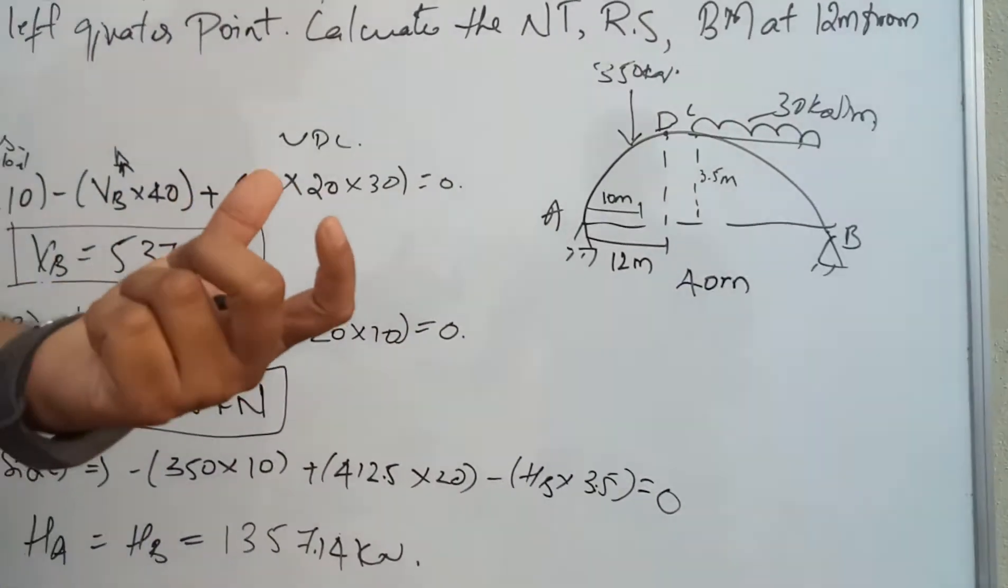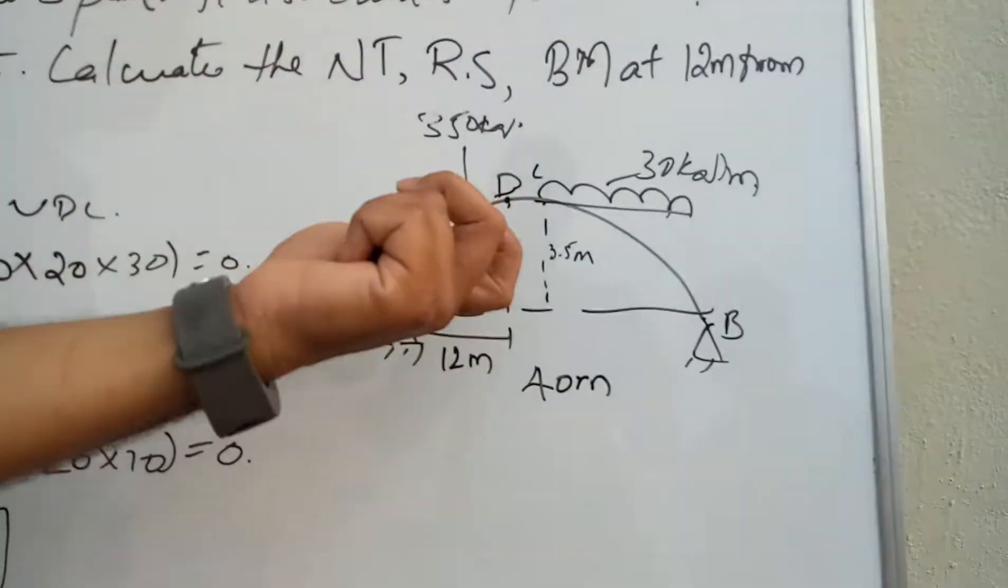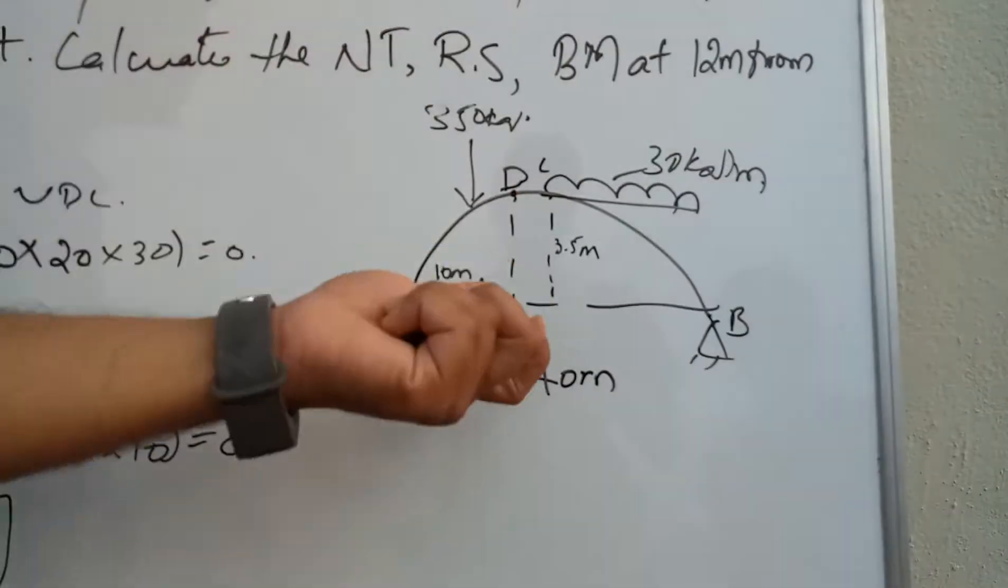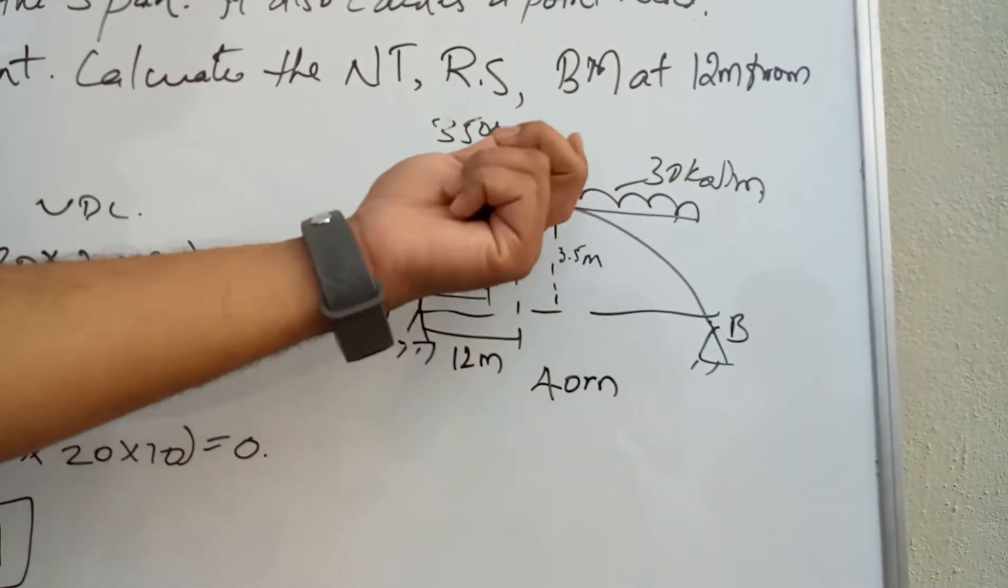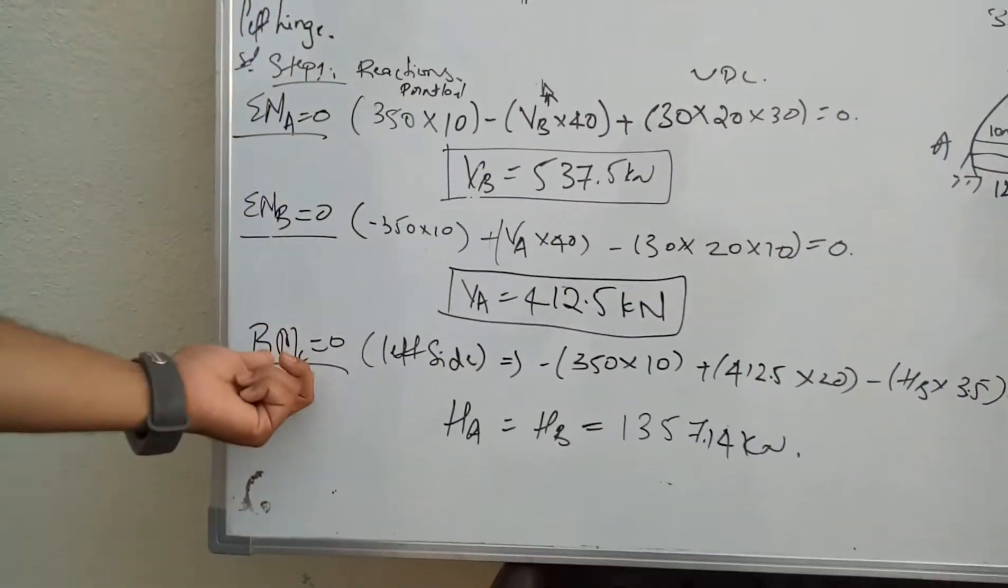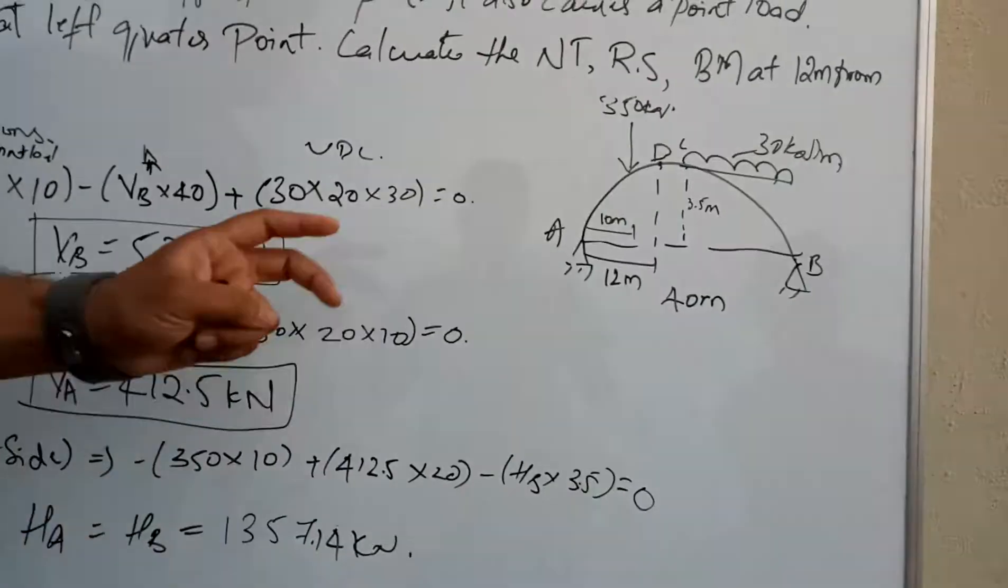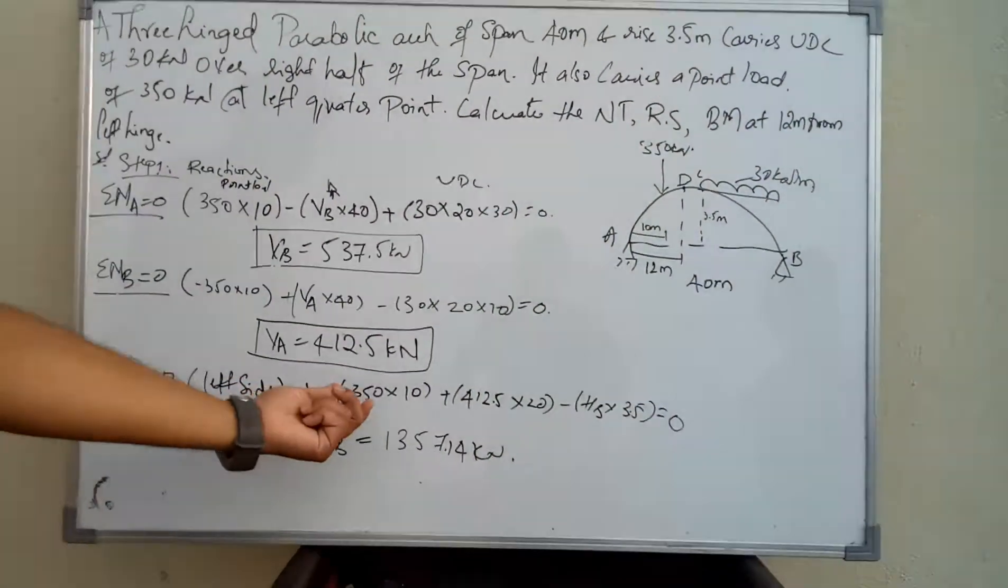Next, to find out HA and HB, we can take the moment at any point in the three-hinged arch, which will be zero. The moment at C equals zero.